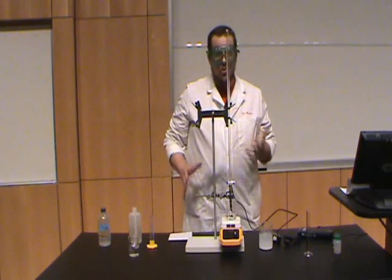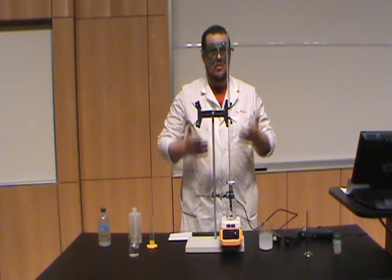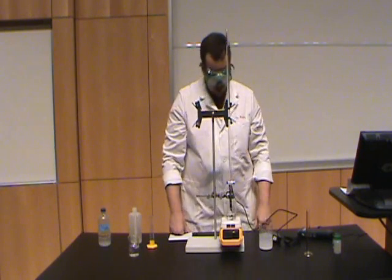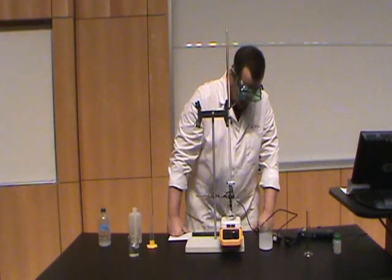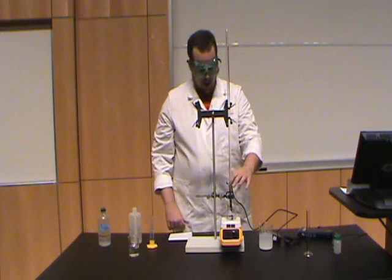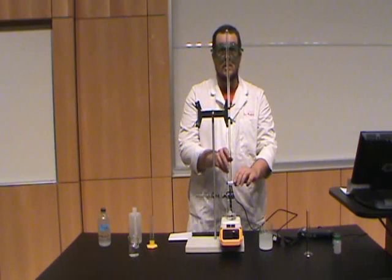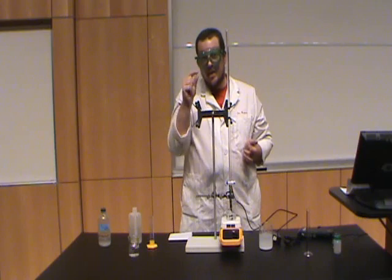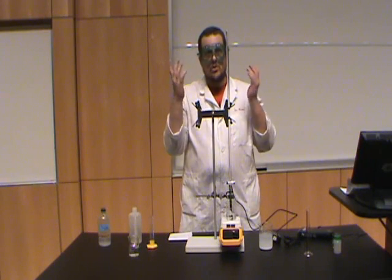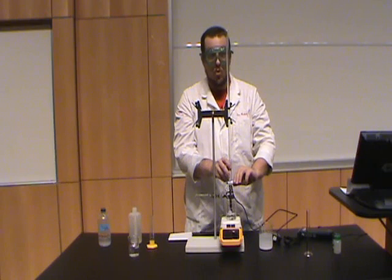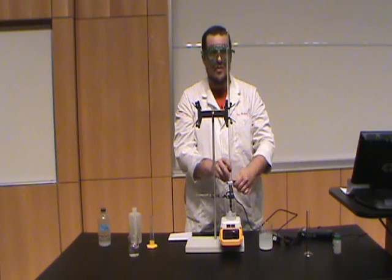So remember, when we're doing burettes, when we're using burettes, we take subtractive readings. So let's turn on the stir and get this thing mixing. Stir a little faster than that. And let's start to add. Now again, we want to add about a milliliter at a time, but don't waste time making it exactly a milliliter because that's just not that important. So let's add some.